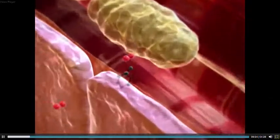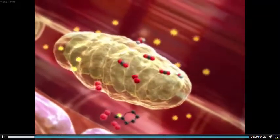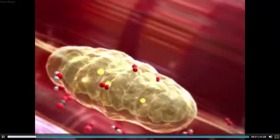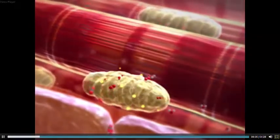In cellular respiration, energy and fuel is converted to ATP, shown here as starbursts. Most ATP is made in the cell's mitochondria. ATP powers the work of the cell, such as contraction.